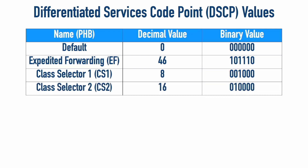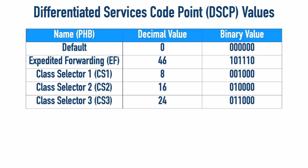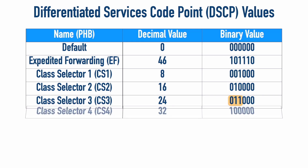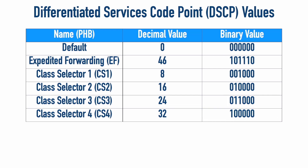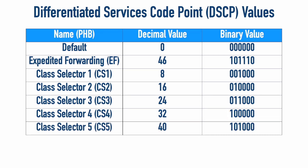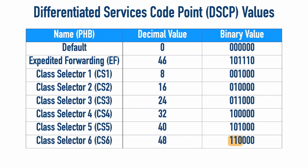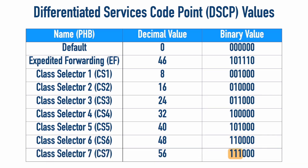In fact, bit for bit, class selector one is identical to what we would see in the six leftmost bits of an IP precedence marking. The same thing continues for CS2 through CS7. Class selector two has a one in the 16 column, giving a decimal value of 16 — and looking at those three leftmost bits in isolation, that's a two. Class selector three gives an IP precedence of three. Class selector four — 100 — is four in decimal. Class selector five — 101 — is four plus one, that's five in decimal. Class selectors six and seven follow the same pattern. We are purely backwards compatible with IP precedence bit for bit, because bit positions four, five, and six are all zeros. This makes up nine of the 21 values.